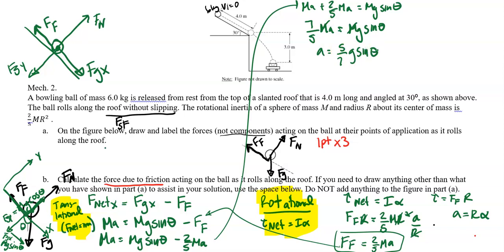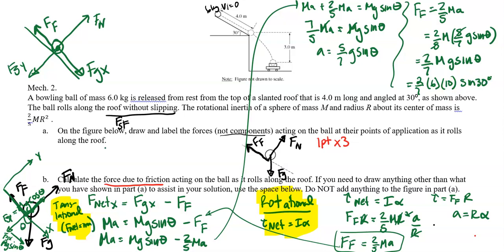Now I've got to go back and find force of friction. We found that to be 2/5 MA, which is 2/5 M times 5/7 G sin theta. That simplifies to 2/7 MG sin theta. Let's plug in the numbers. 2/7 times 6 times 10 times sin 30. When I plugged it all in, I got 8.57 newtons. I'm also going to solve for acceleration, which I got to be 3.57 meters per second squared.